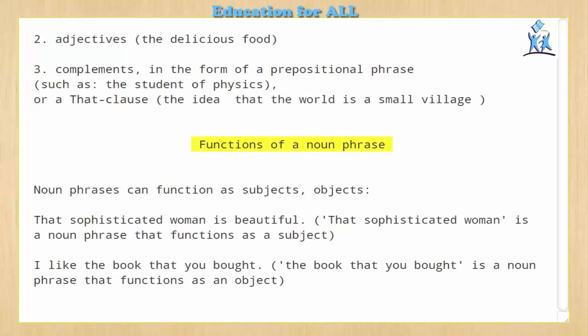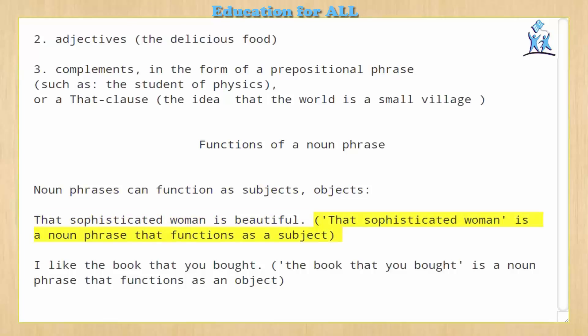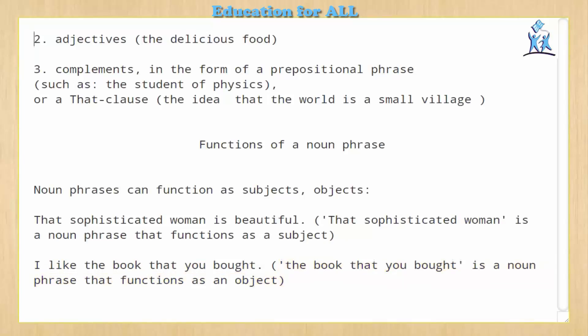Functions of a noun phrase. Noun phrases can function as subjects or objects. 'The sophisticated woman is beautiful' — here, 'the sophisticated woman' is a noun phrase that functions as a subject. 'I like the book that you bought' — here, 'the book that you bought' is a noun phrase that functions as an object.